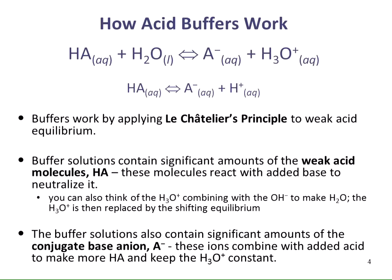Let's think about this system when we've added a base, represented as B with a lone pair. That base will react with a proton, protonating the base, which causes the concentration of the hydronium ion to go down. If hydronium concentration goes down, pH goes up. To compensate, the equilibrium shifts to the right, increasing the H+ concentration to counterbalance the decrease caused by the added base. Adding the base didn't change the hydronium concentration much because the equilibrium shifted to replace the lost hydronium ions.